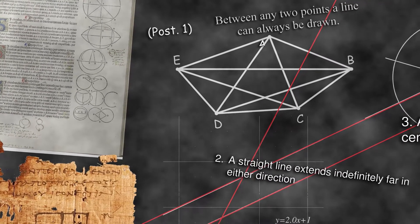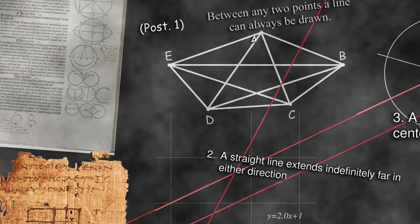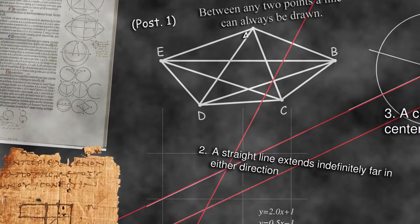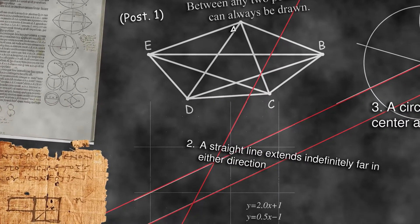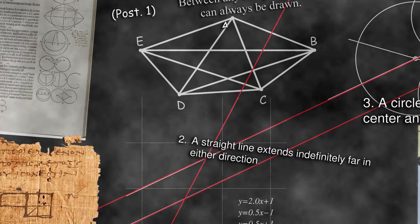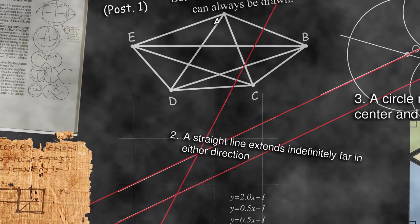By turning mathematics into a logical system, Euclid gave it extraordinary power. He introduced the idea of proofs and the idea that rules could be worked out logically from certain assumptions.